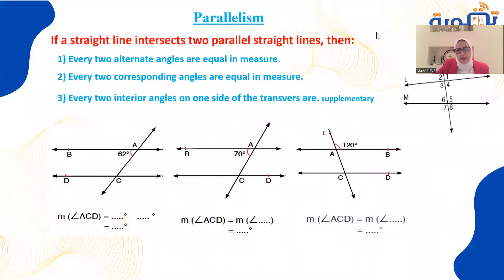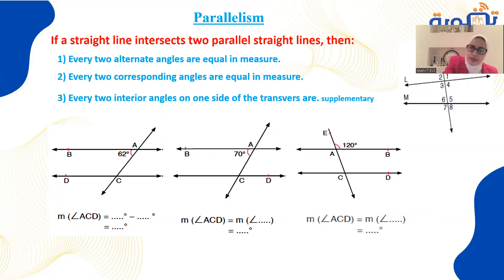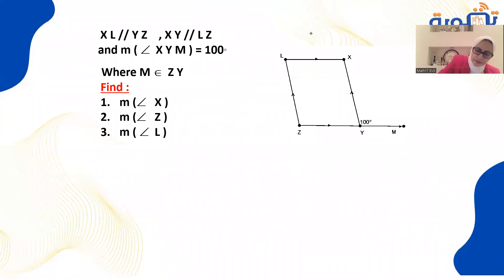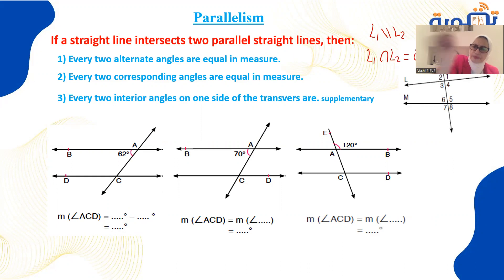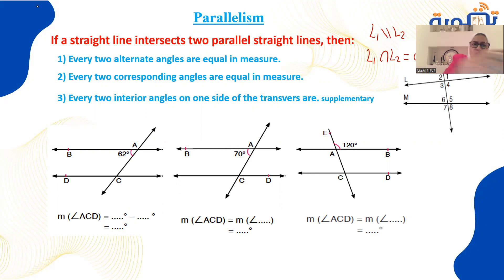Now we'll talk about parallel lines. Parallel means the two lines never meet. If line L1 is parallel to L2 and a transversal intersects both, then every two alternate angles are equal, every two corresponding angles are equal, and every two interior angles are supplementary.